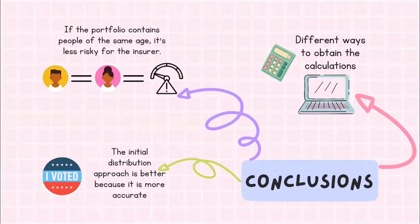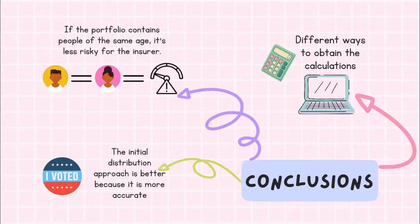As for the conclusions for this problem: there are different ways to obtain the calculations, which help us to corroborate the results. Also, comparing the two cases, we observe that if the portfolio contains people of the same age, the premium value is lower — this can be translated into the portfolio being less risky for the insurer. Finally, it should be noted that the preference of one model over another depends on the programming team and the time available, but it is worth noting that when we take a vote within the team, the initial distribution approach is considered better because it is more accurate.